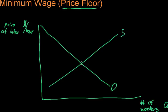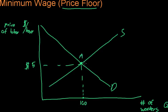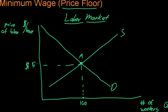Our equilibrium wage we'll say is five dollars an hour, so that's five there. Going down, here is Q, and we'll call that 100 workers. So in equilibrium, at point A, in this labor market we have a equilibrium of five dollars per hour and a hundred workers working. Maybe this is the market for Safeway employees.